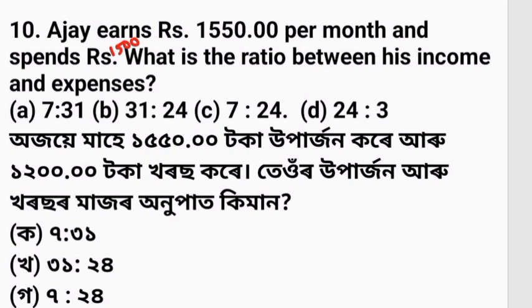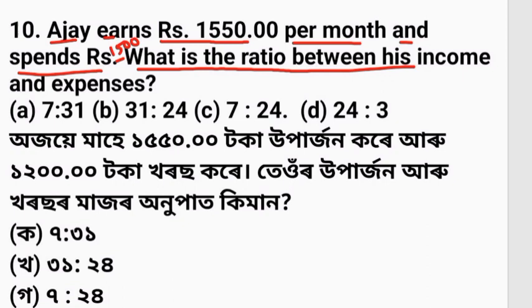Ojoe earns Rs. 1550 per month and expenses Rs. 1500. What is the ratio between his income and expenses?